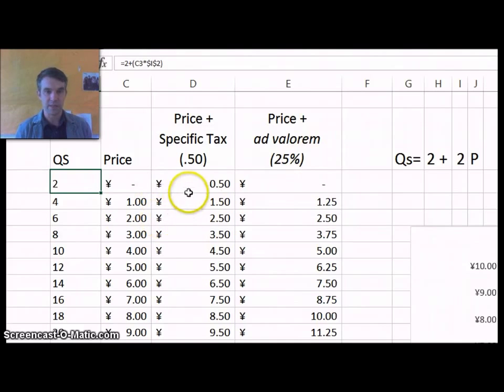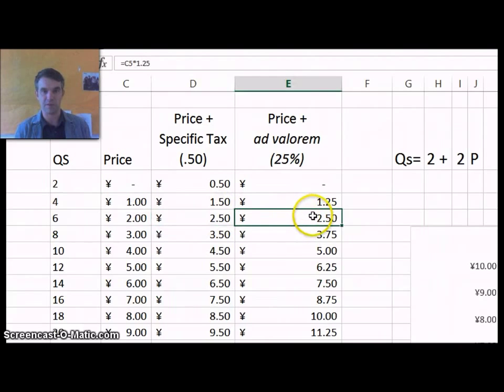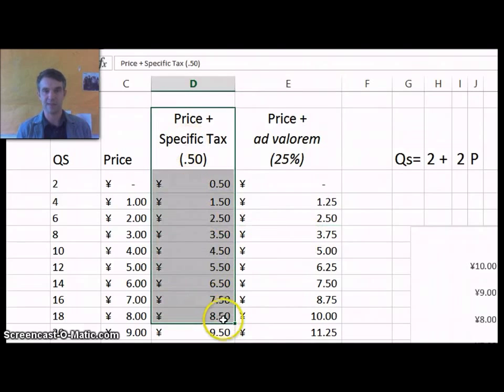The other thing worth noting is that this value, 1.50, is higher than 1.25, but then 2.50 and 2.50 are the same. And then after that, the value in the left column is going to be less than the value in the right column. So we see this supply curve, price plus ad valorem, is rising more steeply, whereas this, price plus specific tax, is just going to be a translation of the original curve.